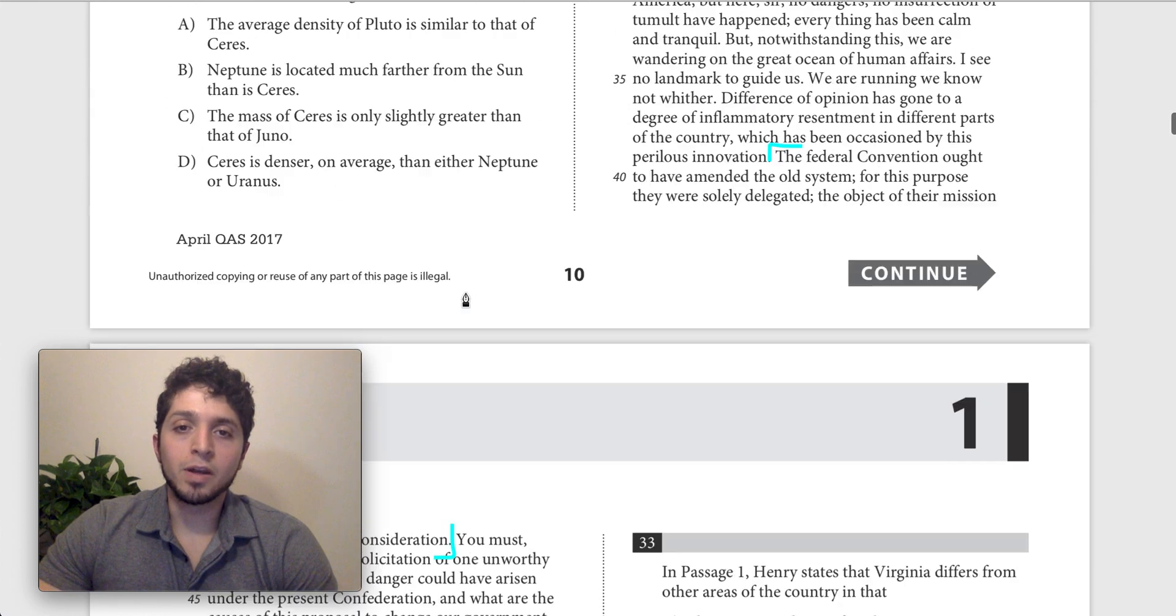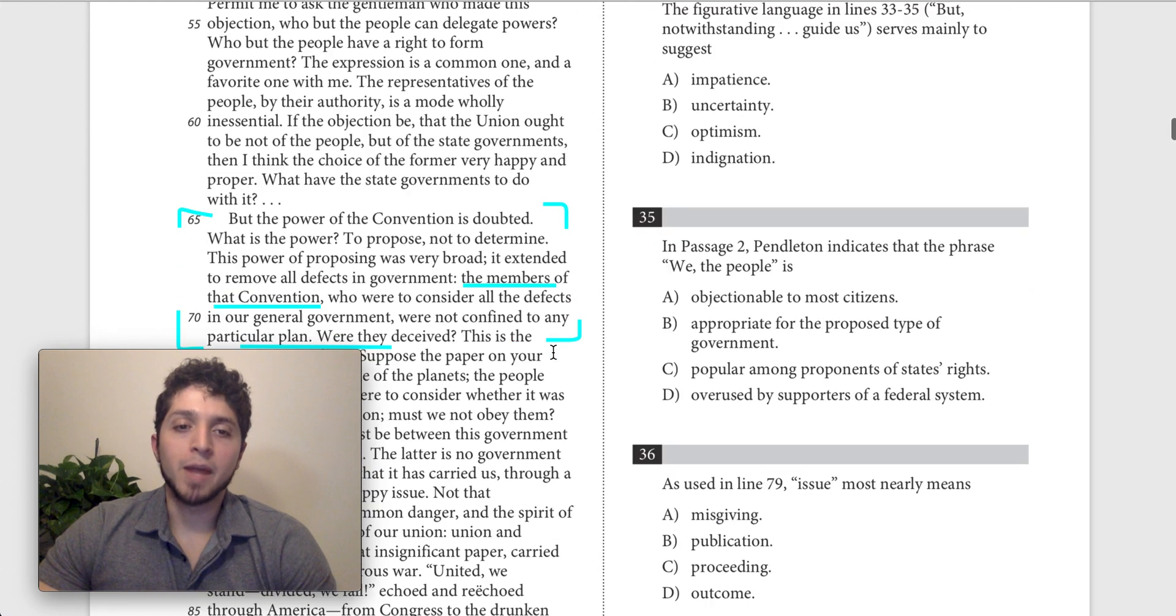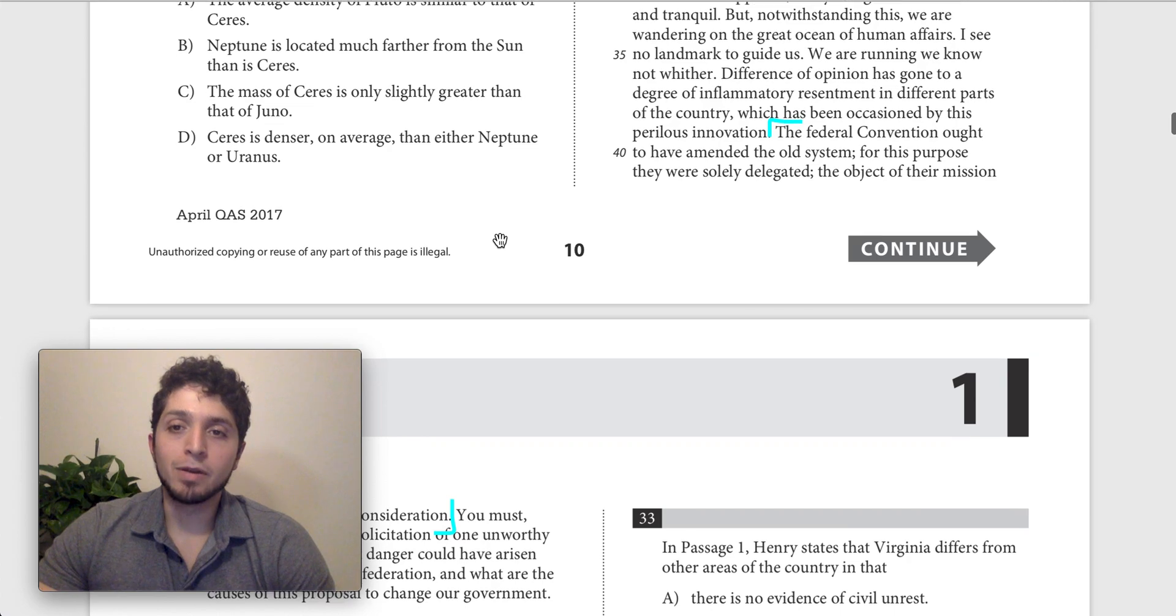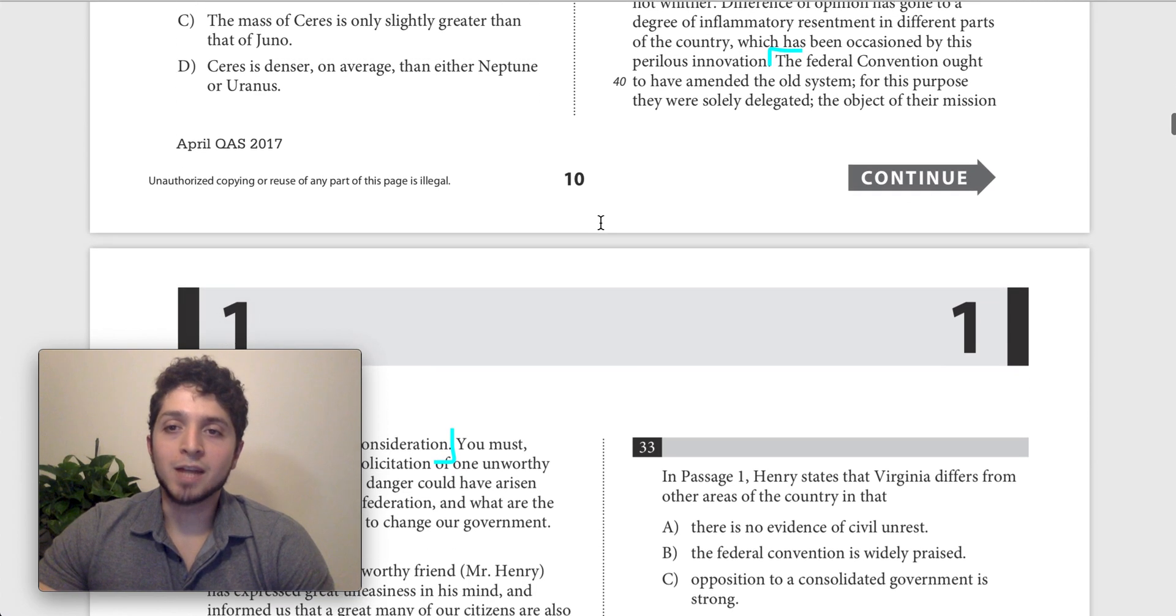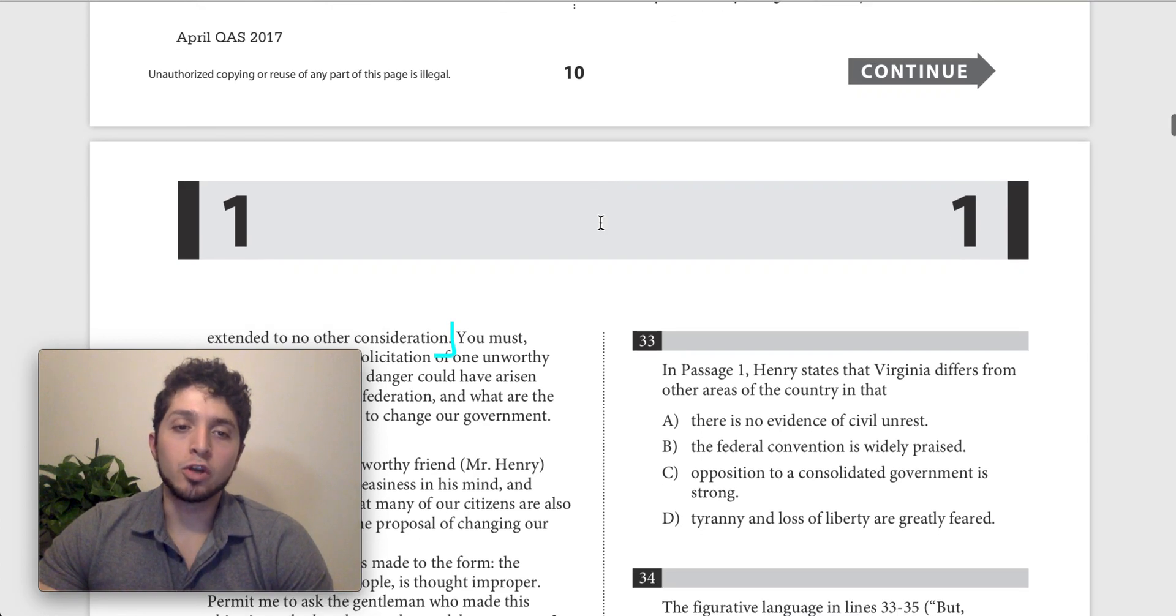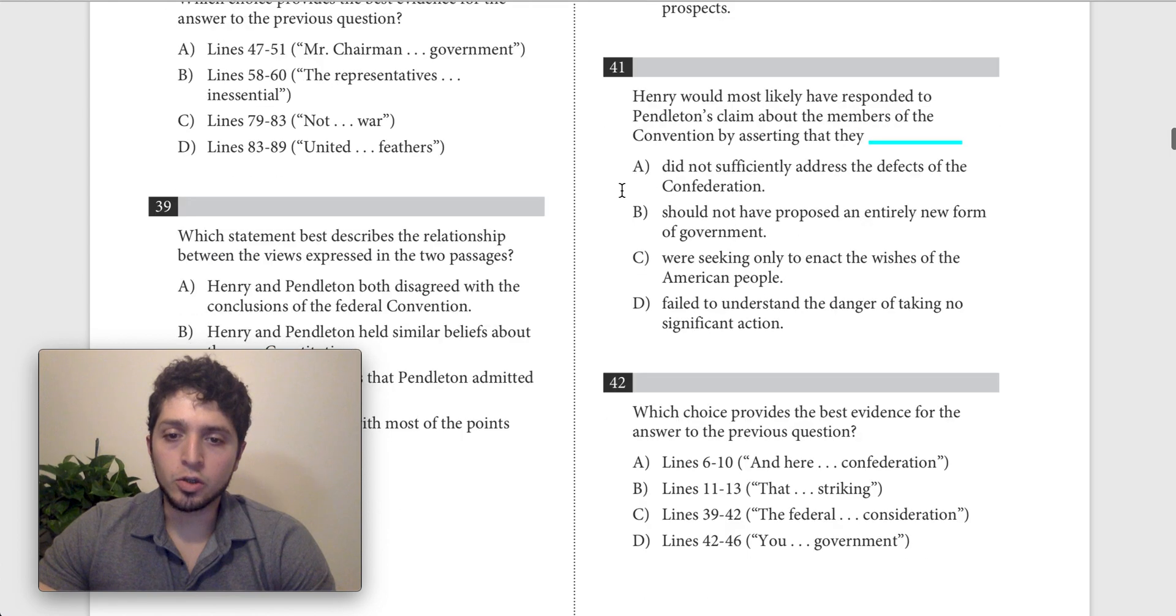I think this is pretty good. This is sort of talking about what rights the federal convention had. We remember that Pendleton is making the claim that they had power to propose to determine they had broad powers, and here is Henry rebutting that or objecting to that. He's basically saying they only should have fixed the old system, not to create an entirely new one. So I think this is a good choice here.